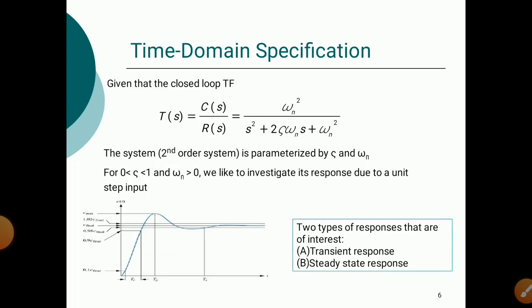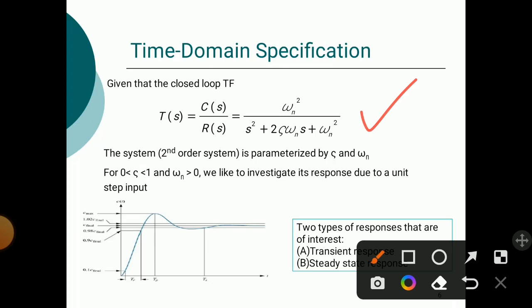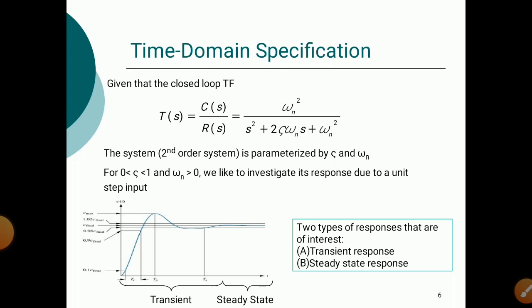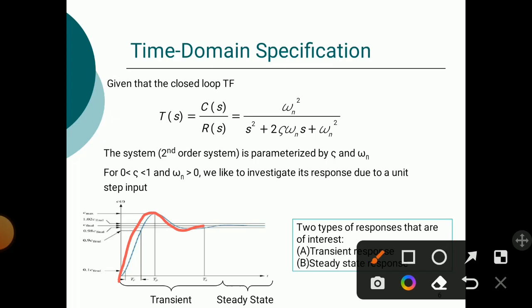Now, time domain specifications. The closed-loop transfer function T(s) = C(s)/R(s) = ωn² / (s² + 2ζωn·s + ωn²). The second order system is parameterized by ζ and ωn. For ζ varying from 0 to 1 and ωn > 0, we investigate the response to a unit step input. The output response consists of two parts: transient response and steady state response. In the graph, the varying part is the transient response and after that we get a straight line, which is the steady state response.